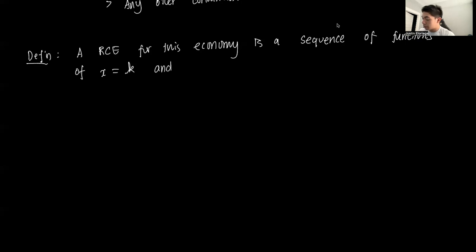So we begin by defining: a recursive competitive equilibrium for this economy is a sequence of functions of the individual state, which is per capita capital, and the aggregate state, which is aggregate capital. Again, we drop the time subscripts when we're doing a recursive formulation.